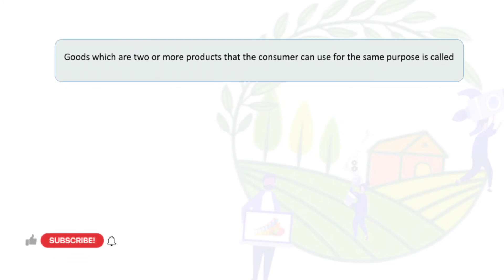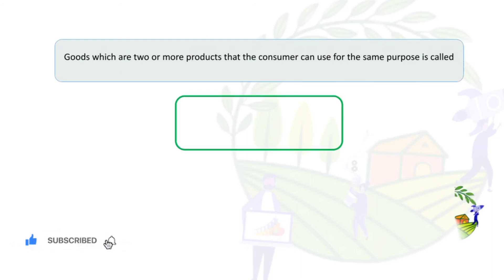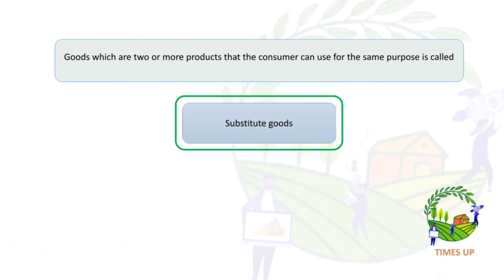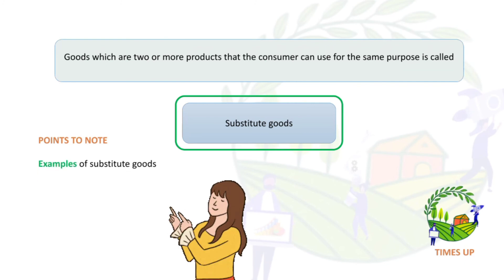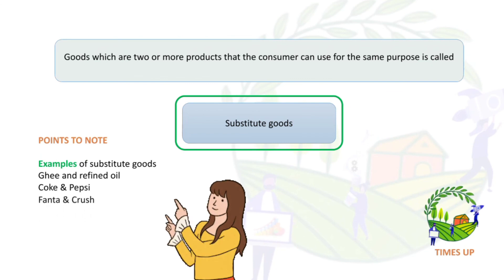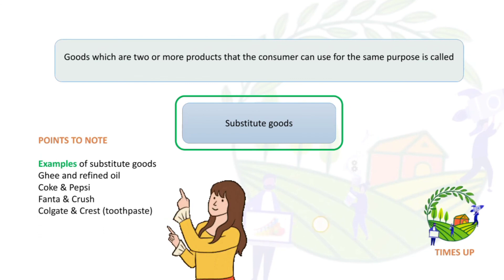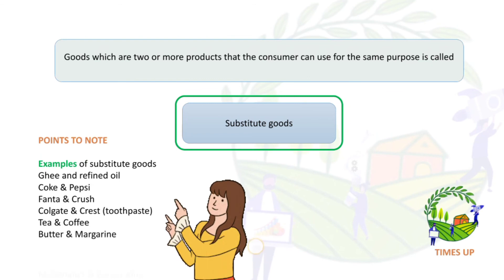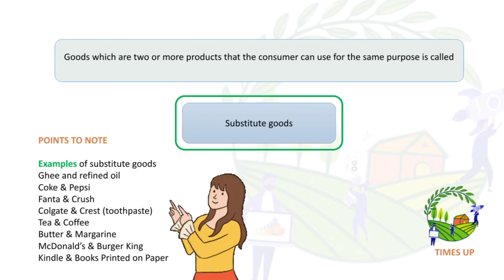Goods which are two or more products that the consumer can use for the same purpose are called substitute goods. Examples of substitute goods include ghee and refined oil, Coke and Pepsi, tea and coffee, butter and margarine, McDonald's and Burger King, and Kindle and books.